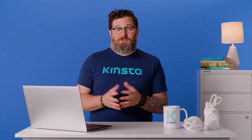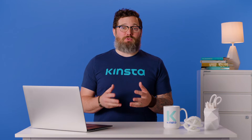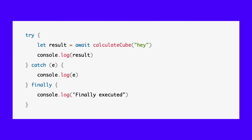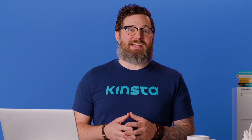Alternatively, you can also handle errors in promises using the traditional try-catch-finally technique. Here's how your promise call will look in that case. However, this works inside an asynchronous function only. Therefore, the most preferred way to handle errors in promises is to chain catch and finally to the promise call.